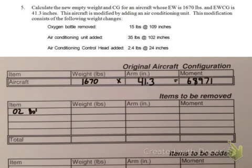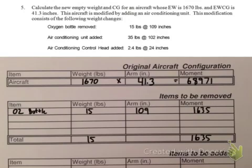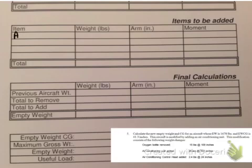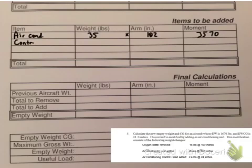For items to be removed, we're taking out the oxygen bottle — 15 pounds at an arm of 109 inches, giving a moment of 1635 when multiplied. Carry those numbers down to the total. Then for items to be added, write in the air conditioner unit and the control head. As always, WHAM — weight times arm equals moment — so calculate the moment for both of those added items.